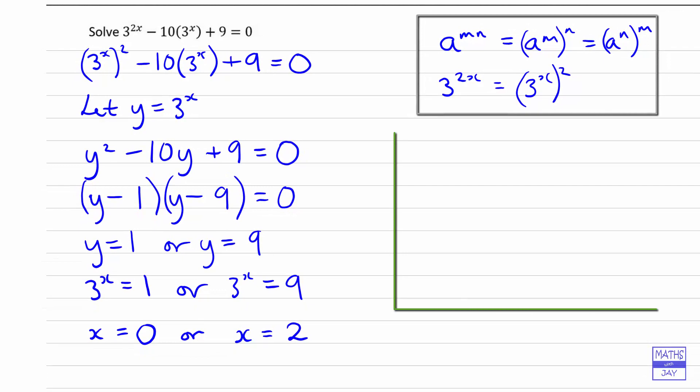And then of course we want to check our answer, or answers I should say. So first of all, let's check x equals 0. So that would give us, substituting back into the original equation, 3 to the power of 2 times 0 minus 10 times 3 to the 0 plus 9. So 3 to the 0 is 1, so we've got 1 minus 10 plus 9, so that is equal to 0, so x equals 0 is a solution.